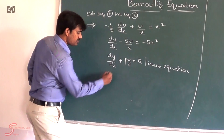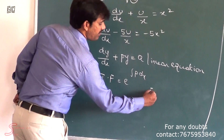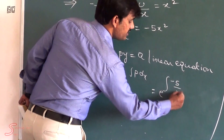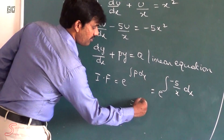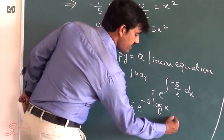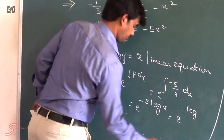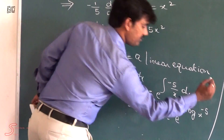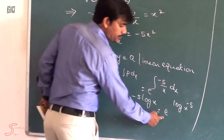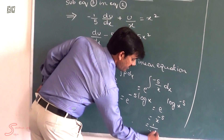The integrating factor is IF = e^(∫p dx) = e^(∫−5/x dx) = e^(−5 ln x) = e^(ln x^(−5)). Since e^(ln x^(−5)) = x^(−5), the integrating factor is 1/x⁵.